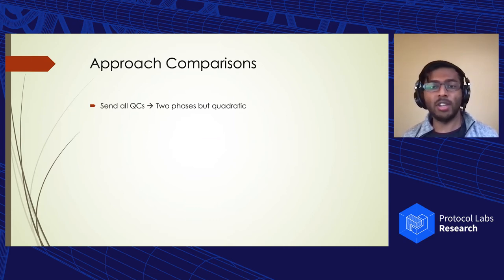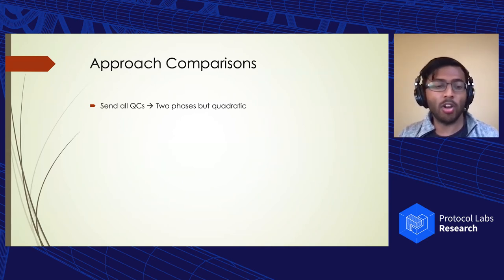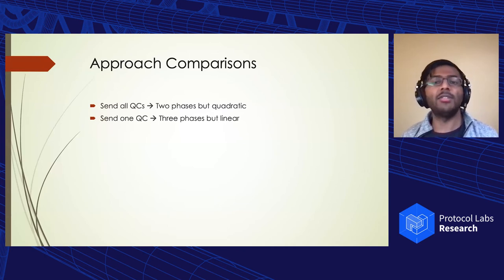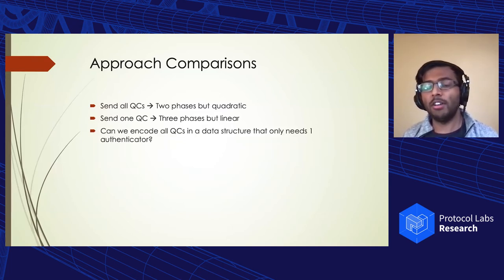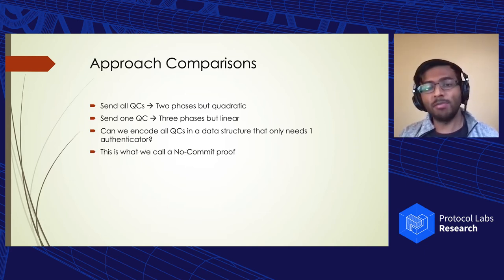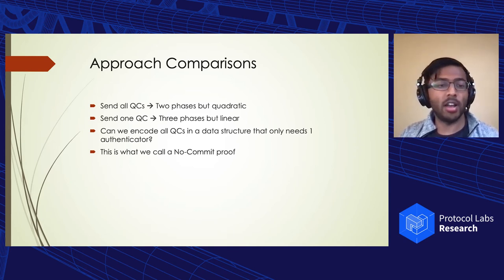So let's take a step back and summarize the background. We pretty much have two main approaches to work with. The first approach is that all QCs are sent, which allows for a latency of two phases, but this incurs quadratic costs. And the other approach is that we send just the highest QC, but this requires three phases, but it's linear. So the key question we ask is whether we can actually figure out a way to encode all of the QCs in such a way that we only use one authenticator, thereby getting linearity. And this is precisely the question that the no-commit proof answers.